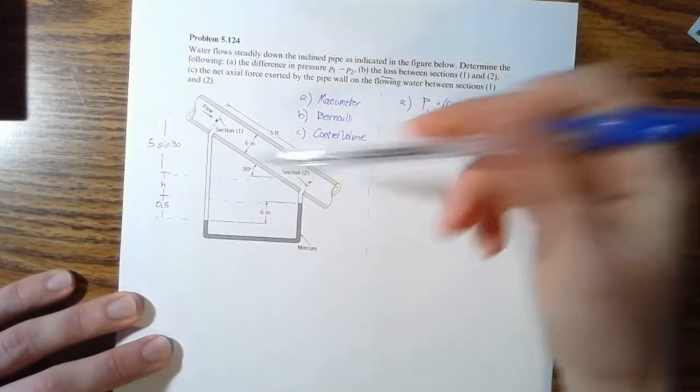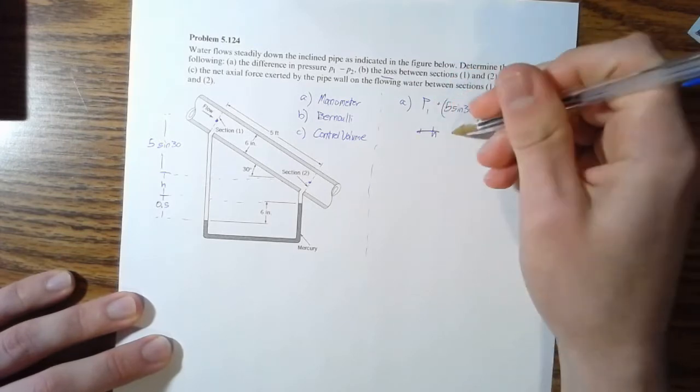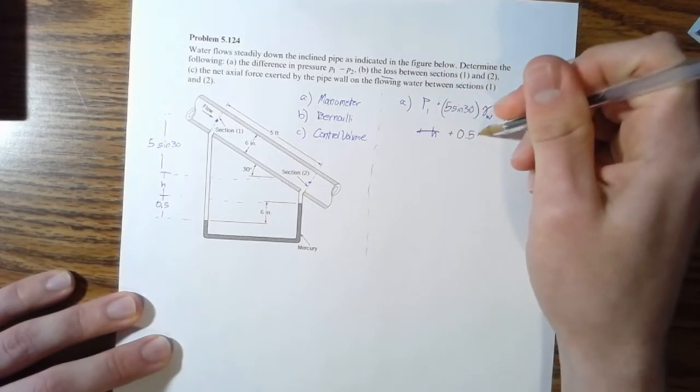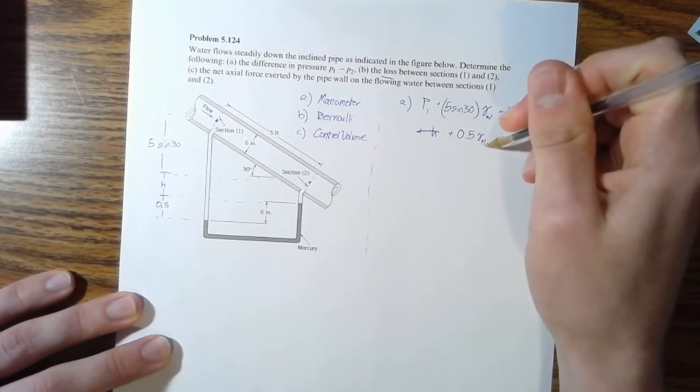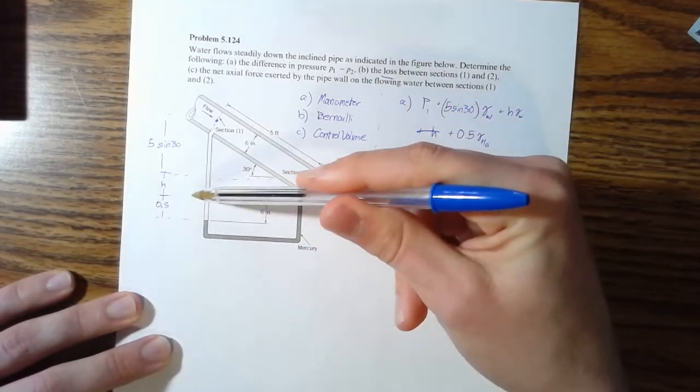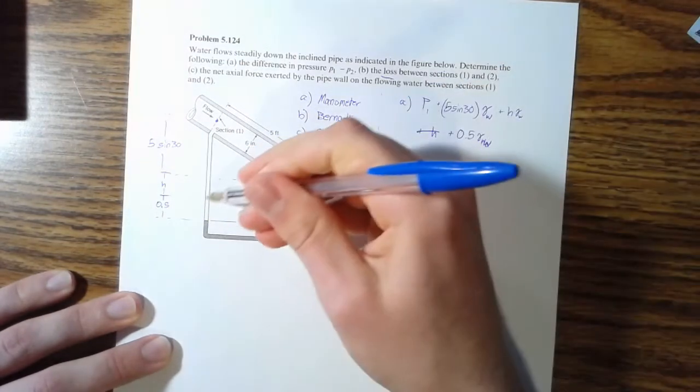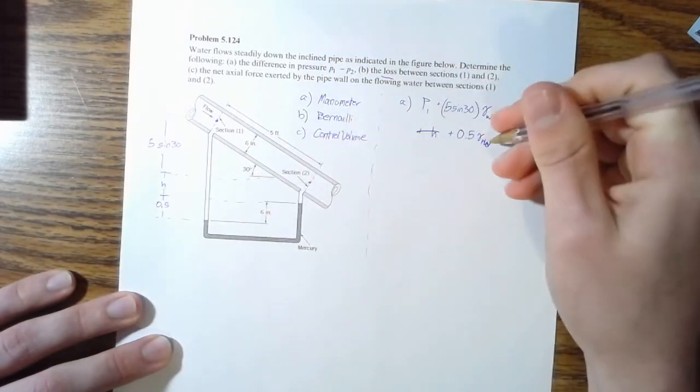And then here we're going to go down, but this time it is plus 0.5 times gamma of mercury. And then that gets us to this point, or sorry, that should be gamma of water, right? Because we're moving from here to here. That's still water. So that is water.